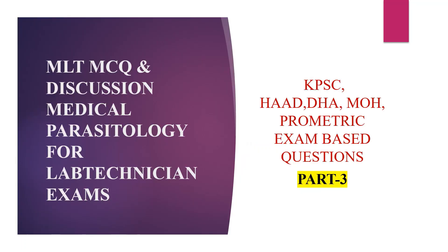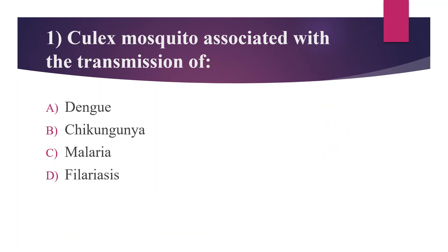First question: Culex mosquito is associated with the transmission of option A. Dengue, option B. Chikungunya, option C. Malaria, option D. Filariasis. The answer is option D, Filariasis. Another disease transmitted by Culex mosquito is Japanese encephalitis.